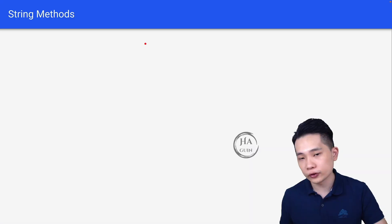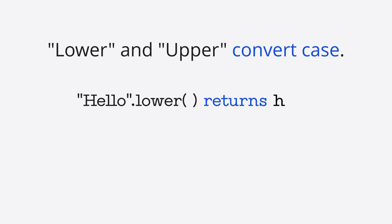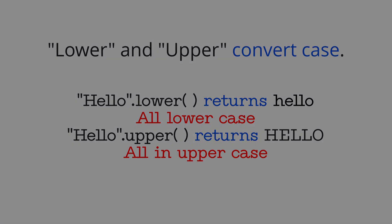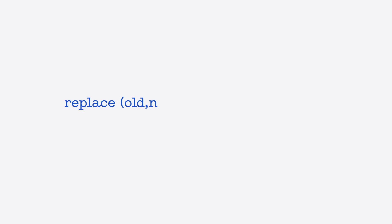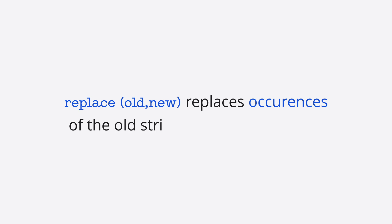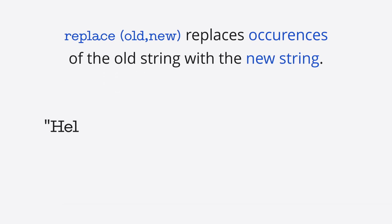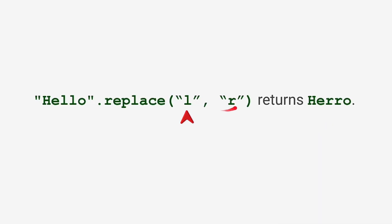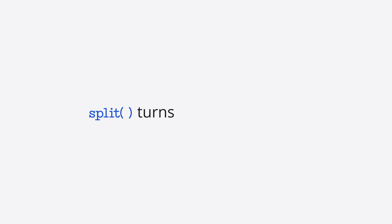Now let's look at some string methods. lower() and upper() convert case: "Hello".lower() returns "hello" and "Hello".upper() returns "HELLO". The replace(old, new) method replaces occurrences of the old string with the new string. For example, "Hello".replace('l', 'r') returns "Hero", replacing all 'l' characters with 'r'.